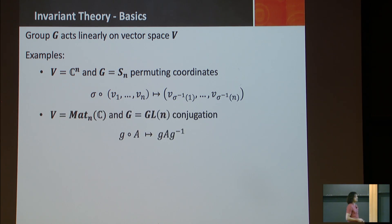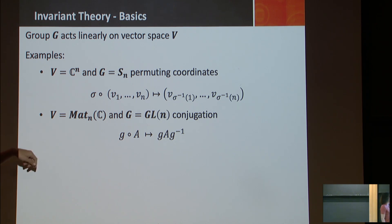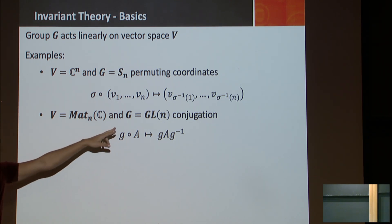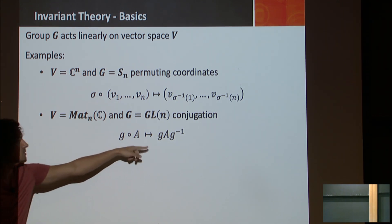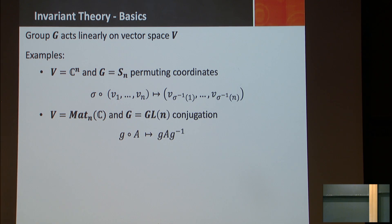Another example: I have the vector space of complex matrices and the general linear group — all the invertible matrices — acting by conjugation. That's also a linear action because I can add matrices A plus B and the action is the same.